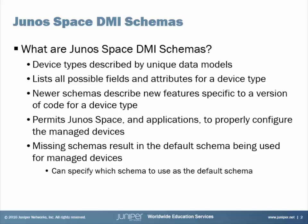The next point explains this further: newer schemas describe new features specific to a version of code for a device type. So with newer schemas, say you have a schema for an MX device for an old version of code — a 10.x or maybe an 11 version of Junos — a schema for Junos 15.x is going to list newer features. This allows Junos Space and Space applications such as Security Director or Network Director to properly configure the managed devices.